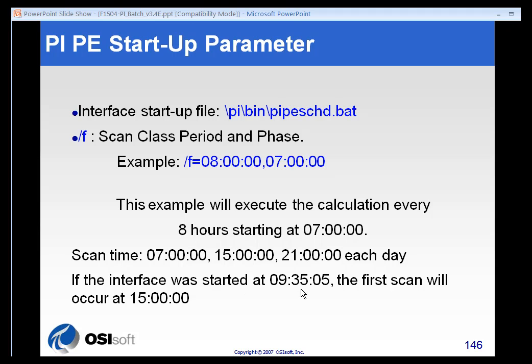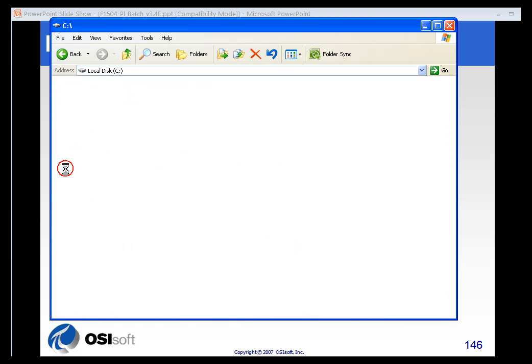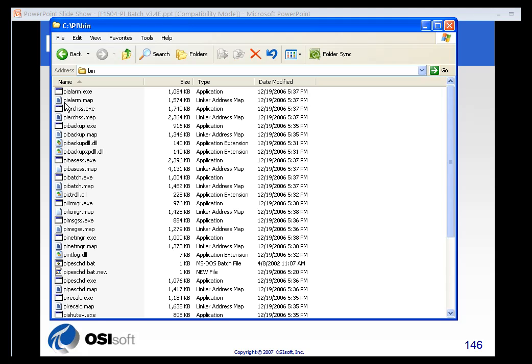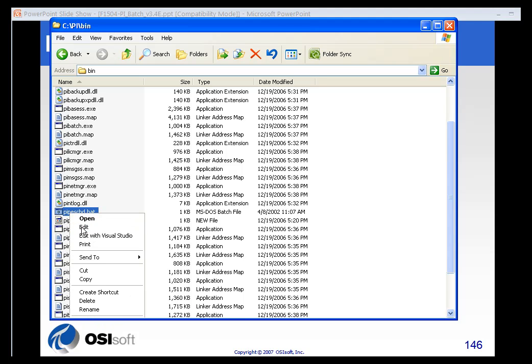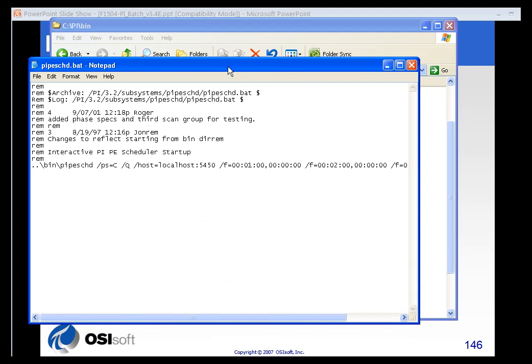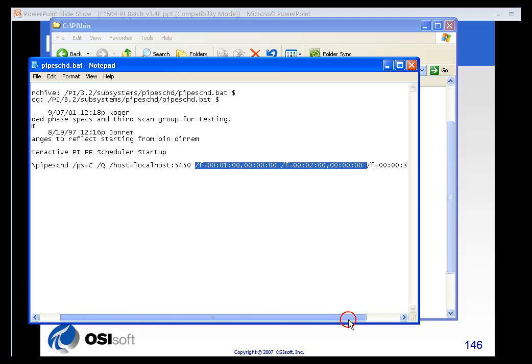If we go to the file, the PI slash binary or bin folder, we'll find the PI performance equation scheduler dot bat file. We can edit that and you can edit that with any text editor. And you can see the scan frequencies are all listed in order here.